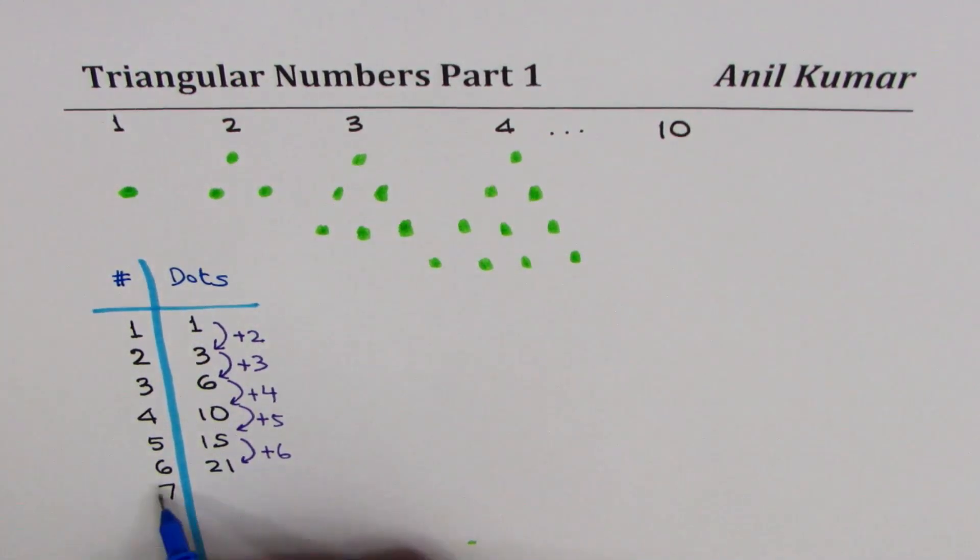So let's add seven now. So we get 28. So for eight, we'll add eight. So we get 28 plus 8 as 36, plus nine. So we get 45, and then for 10, we'll add 10, we'll get 55. Do you see that? So adding these numbers each time will give us the next pattern.